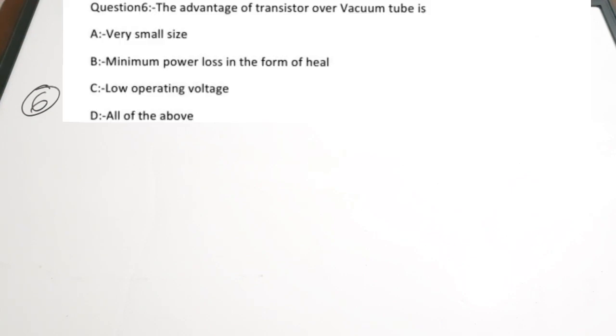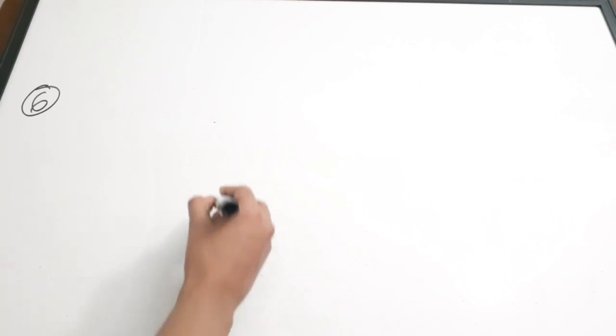Sixth question: the advantage of a transistor over a vacuum tube is dash. Options: A) very small size, B) minimum power loss in the form of heat, C) low operating voltage, D) all of the above. Vacuum tubes are large, have high heat dissipation, and require high operating voltage. Transistors were invented to overcome these problems. Correct answer is option D — all of the above.